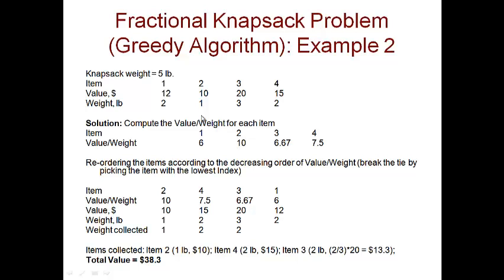We pick item 2 — 1 pound, $10 — leaving 4 pounds. Next we pick item 4, which is 2 pounds, accommodating it fully, leaving 2 pounds. Then item 3 is 3 pounds but we can only take 2 pounds, so proportionally that's 2/3 of $20 = $13.3. The total maximum value is $10 + $15 + $13.3 = $38.3.